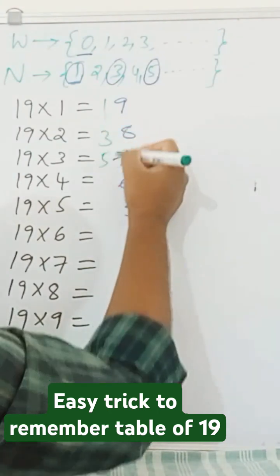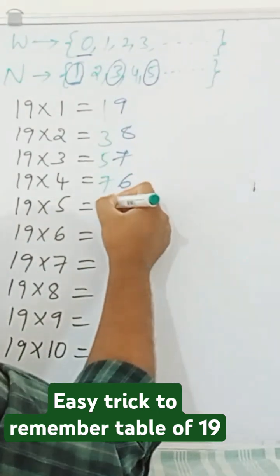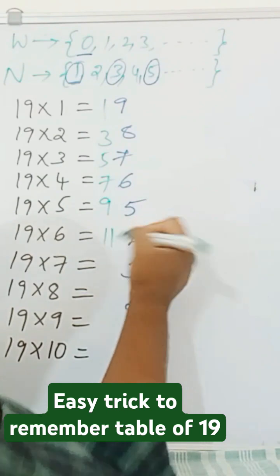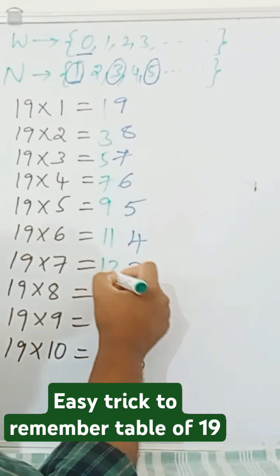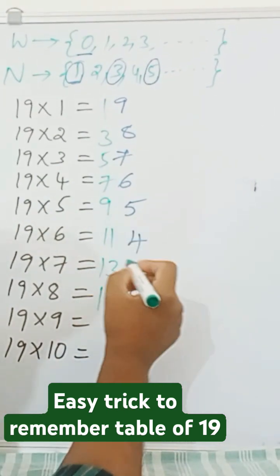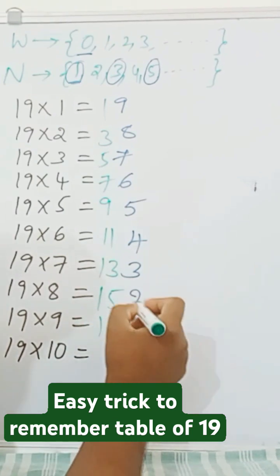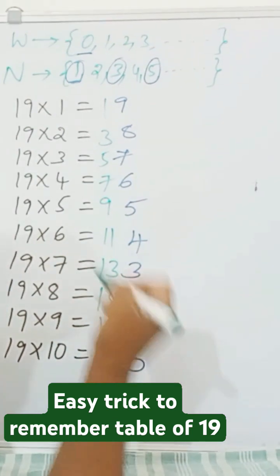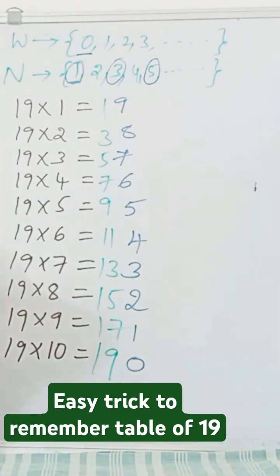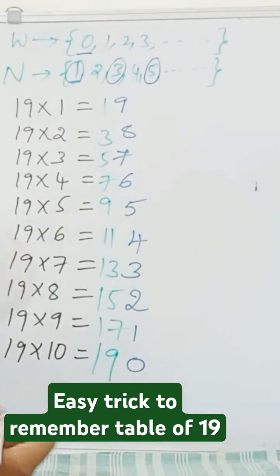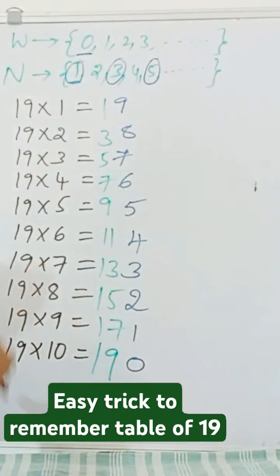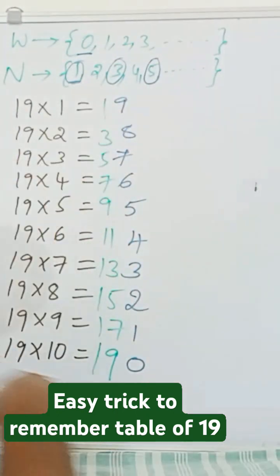5, 7, 9, 11, 13, 15, 17, 19. See, this is the answer. This is the table of 19, very easy to remember. I will show two different numbers.